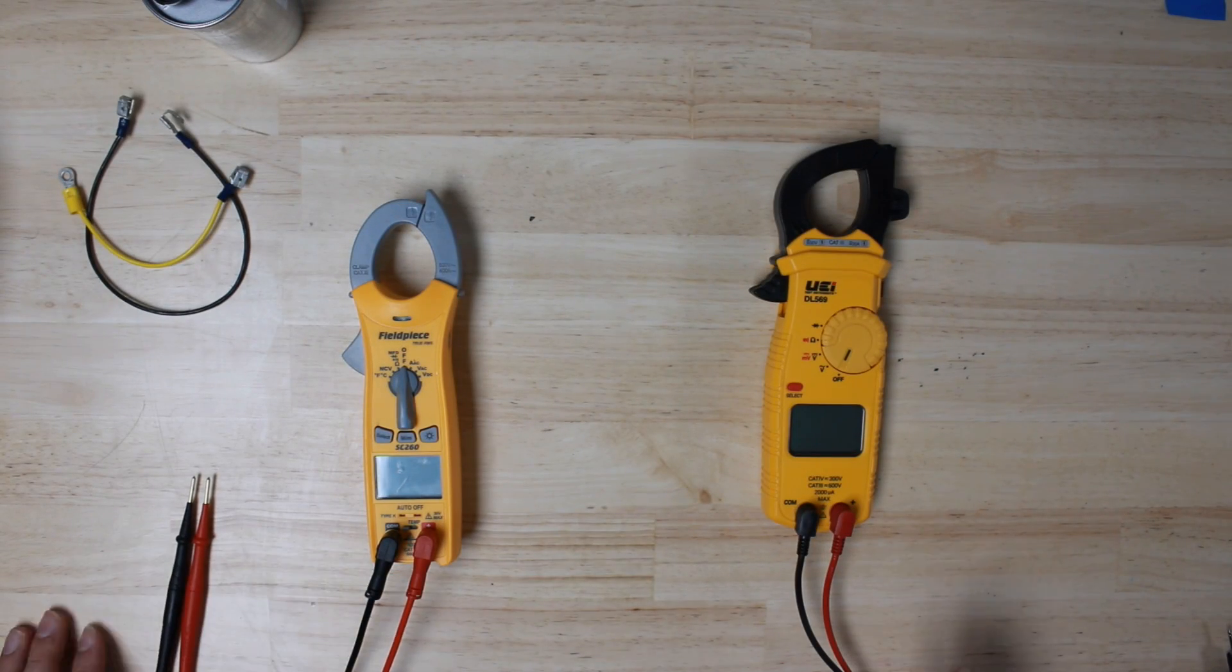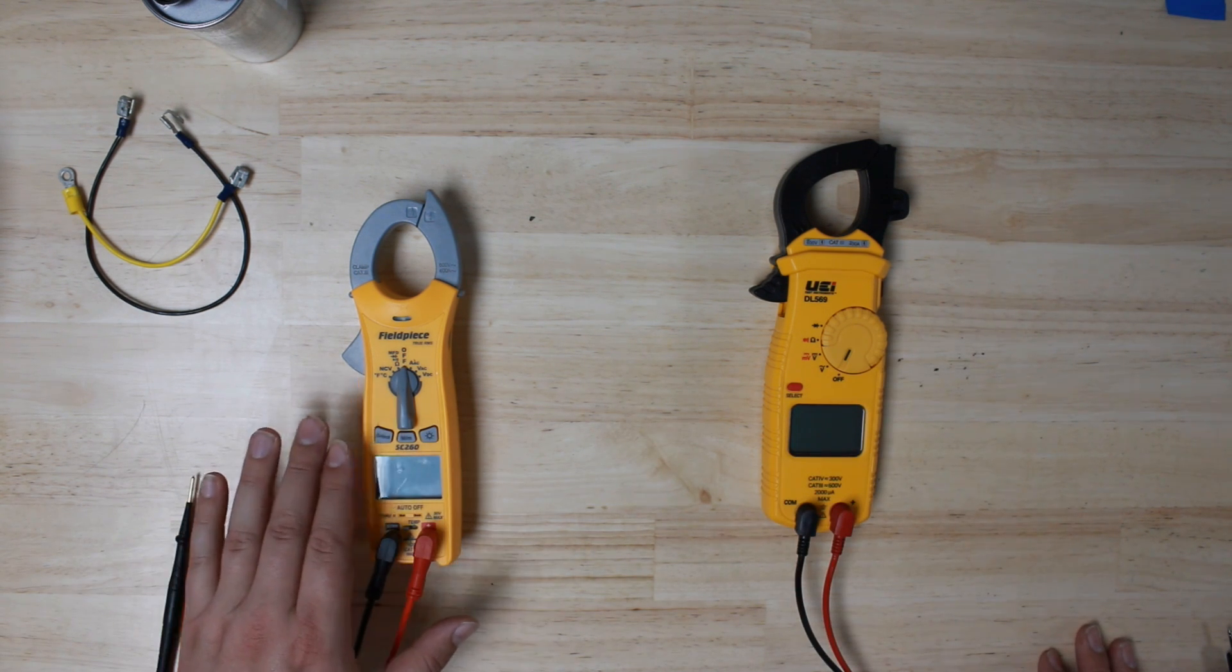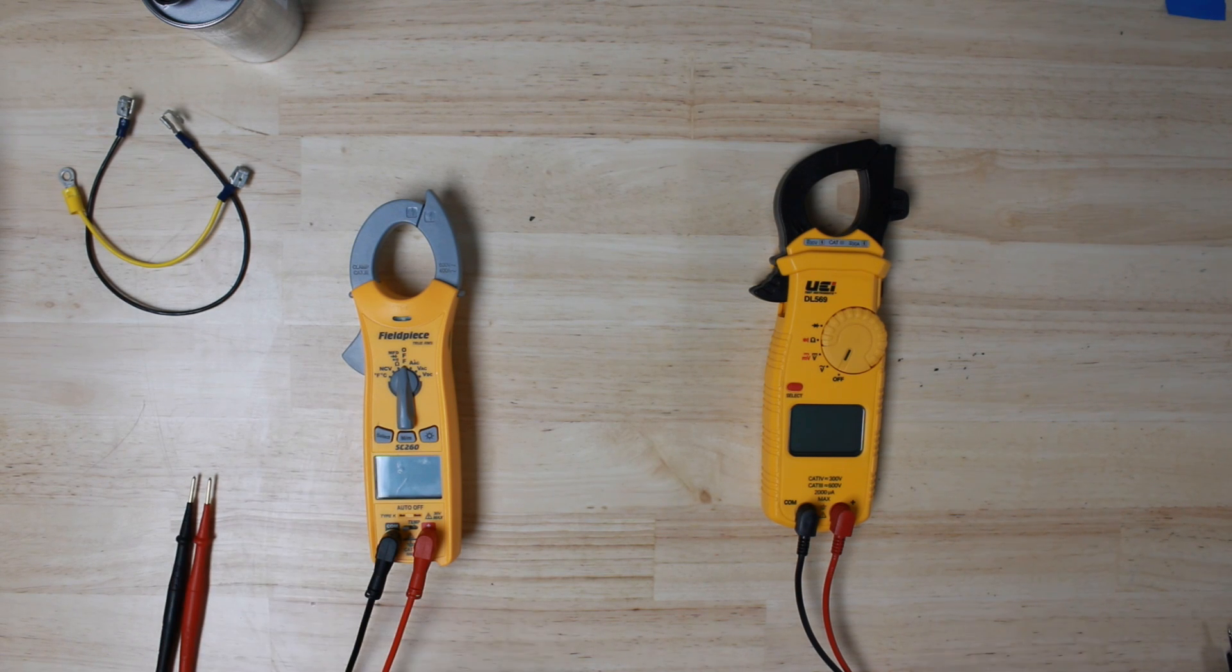Here's the two meters we're going to be looking at today. The first one is our UEI DL569, and the other one is the Fieldpiece SC-260. These are both entry-level meters on the lower end of the price range. They both do pretty similar functions overall.